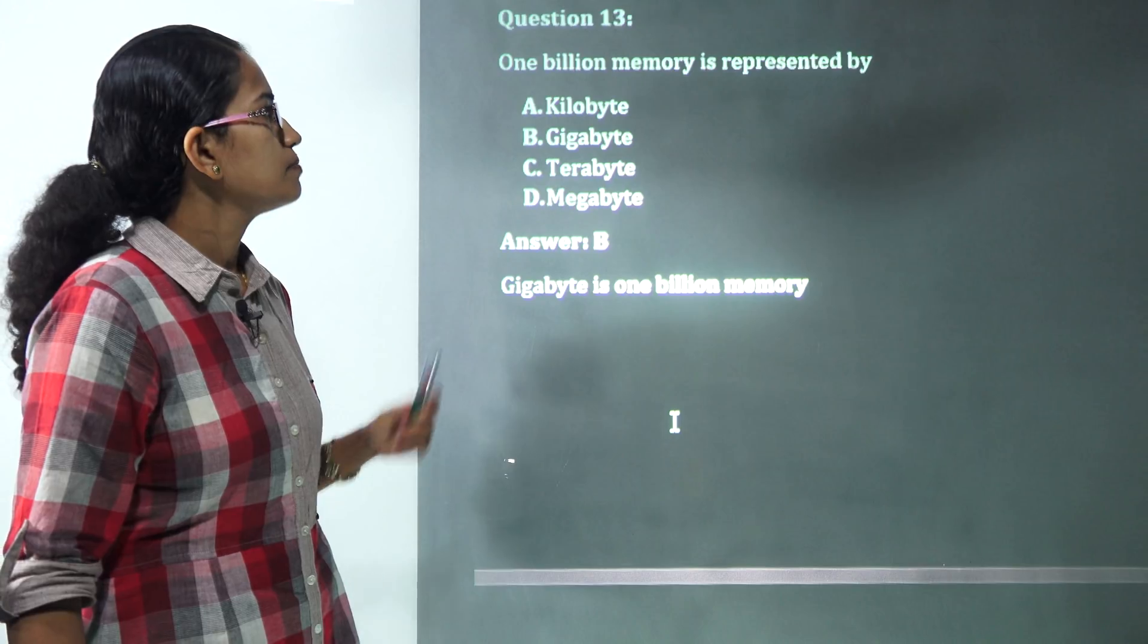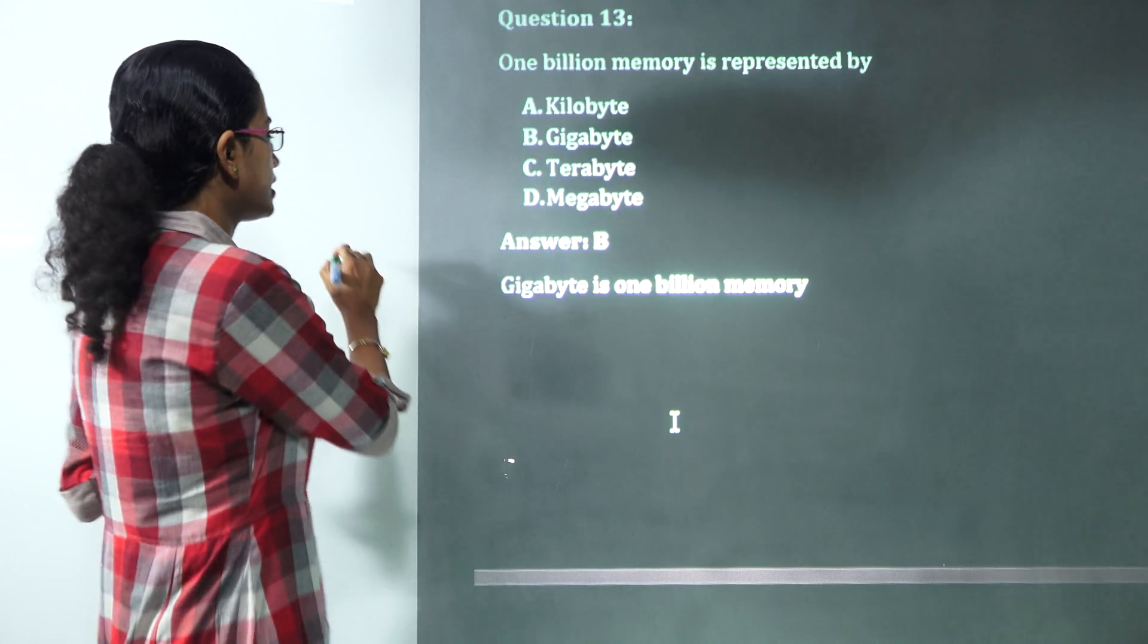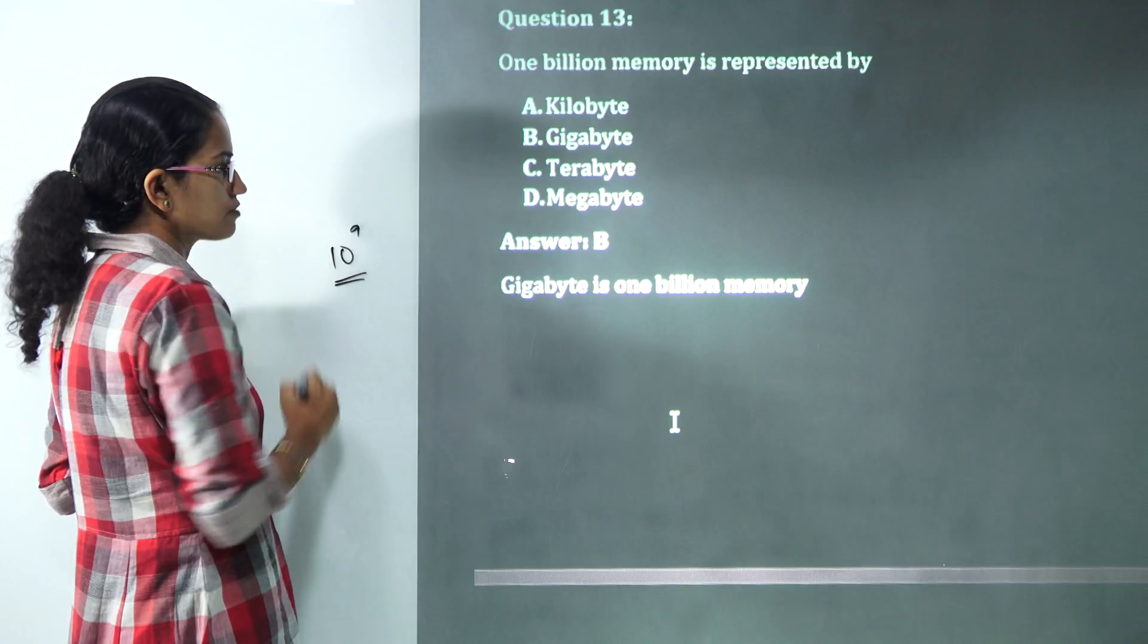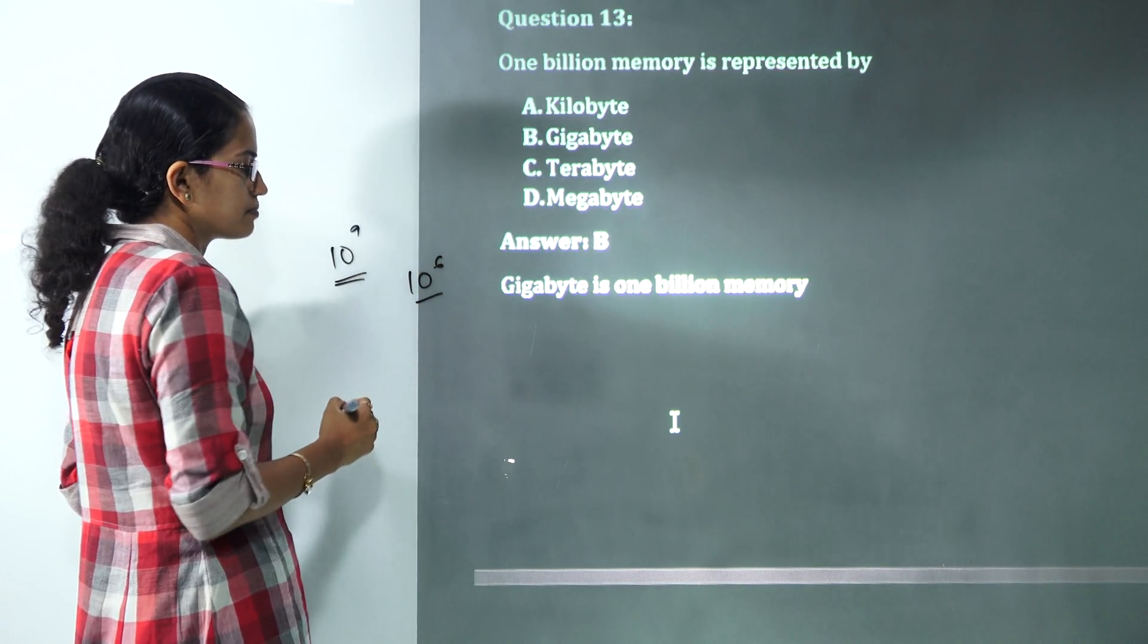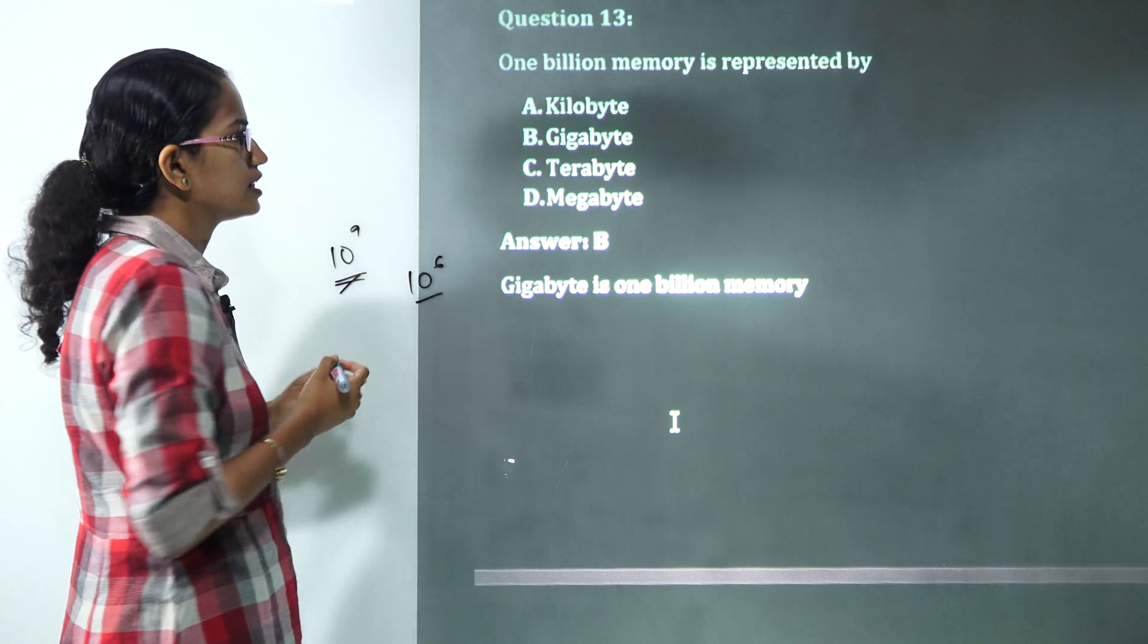1 billion memory. 10 raised to power 9 is something that we need to understand. That's gigabyte. You would have 10 raised to 6 at megabyte and 10 raised to 9 as gigabyte. Gigabyte would be the correct answer here.